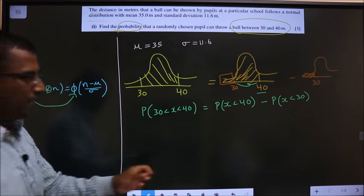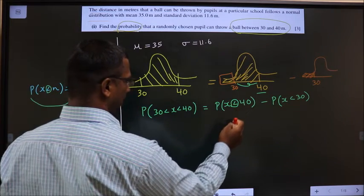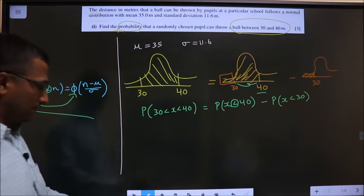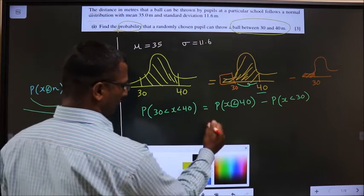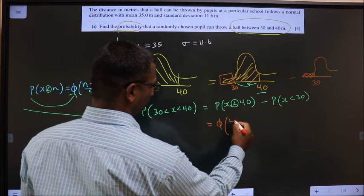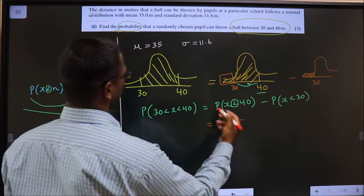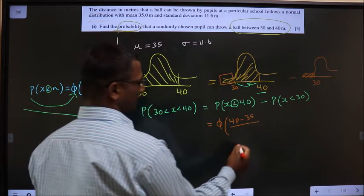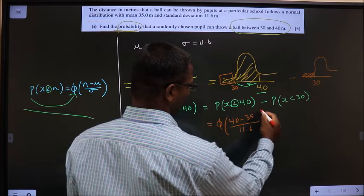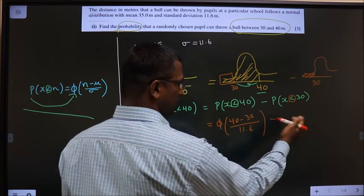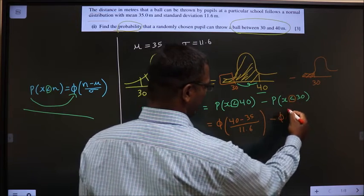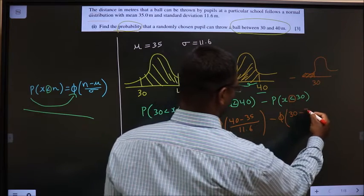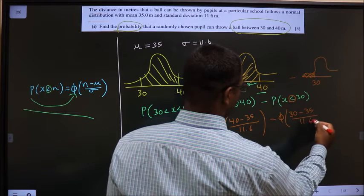Clear? Now, come over here. Here it is less than. So, I can apply this on to this one. So, that will become phi of 40 minus mean 35 by standard deviation 11.6. Minus here also less than symbols of P will change to phi. 30 minus mean 35 by 11.6.